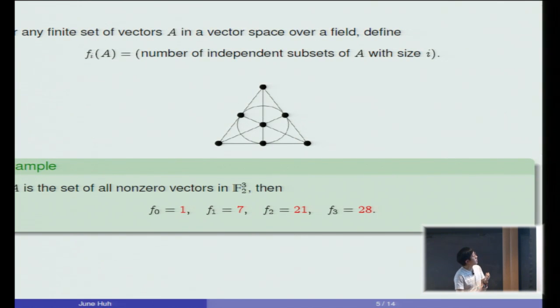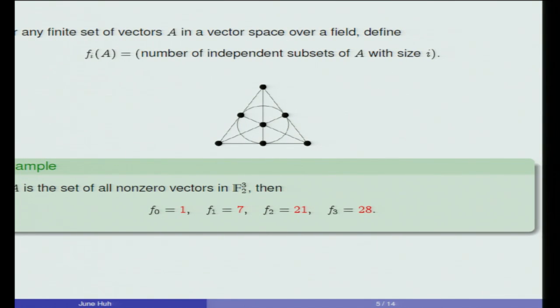Here is another variation of the same conjecture. This time you start with a set of vectors in a vector space over whatever field, let's say A, and you associate the configuration of vectors a sequence f_i where the i-th entry f_i is the number of independent subsets of A which has size i. So for example, if you pick all seven non-zero vectors in three-dimensional vector space with field of two elements, then you see this picture, the Fano plane over F_2.